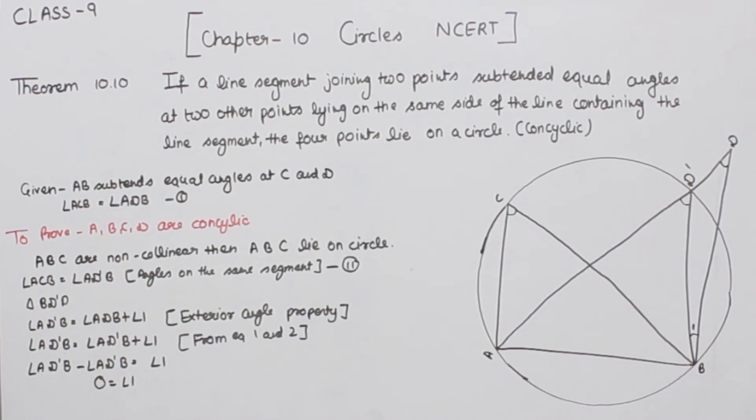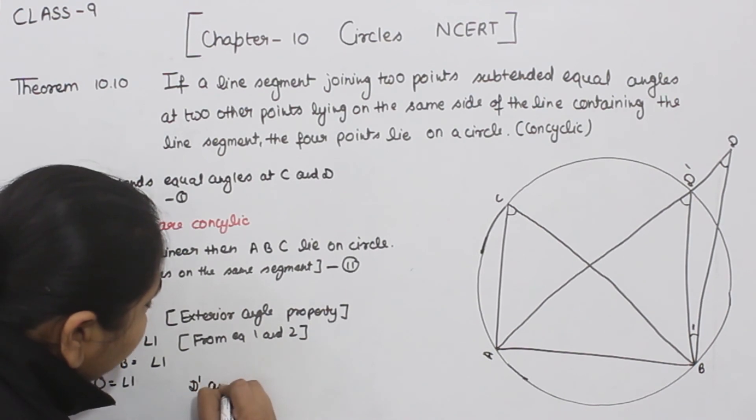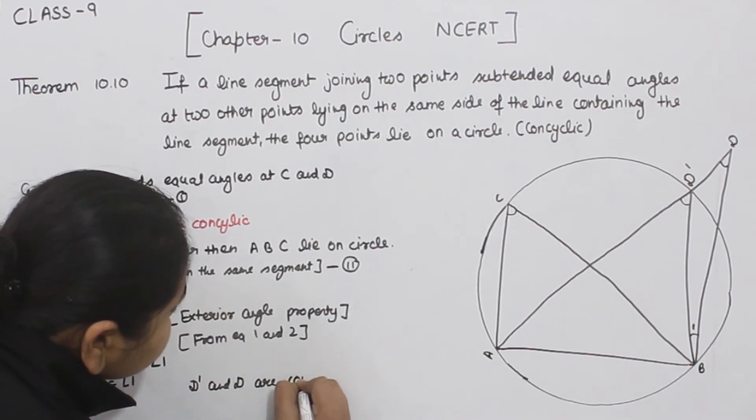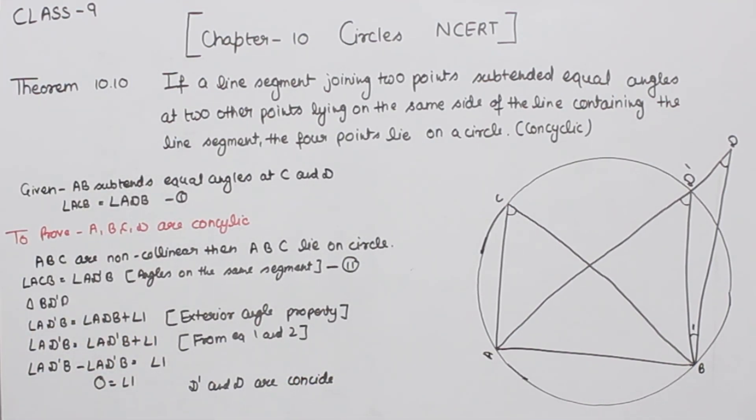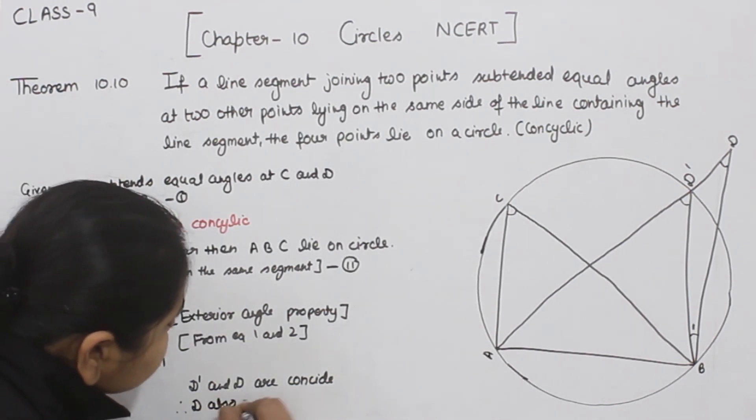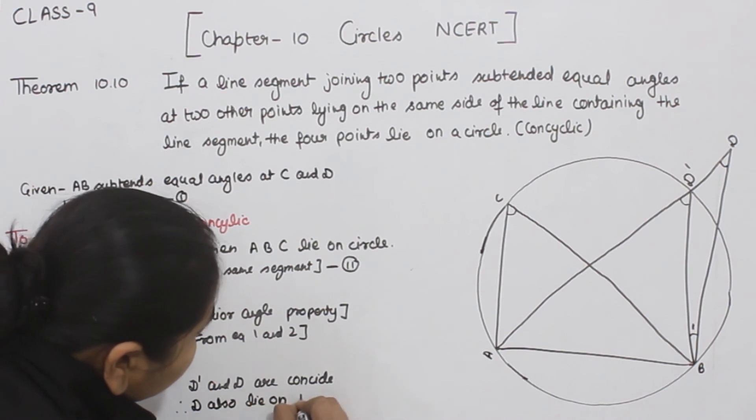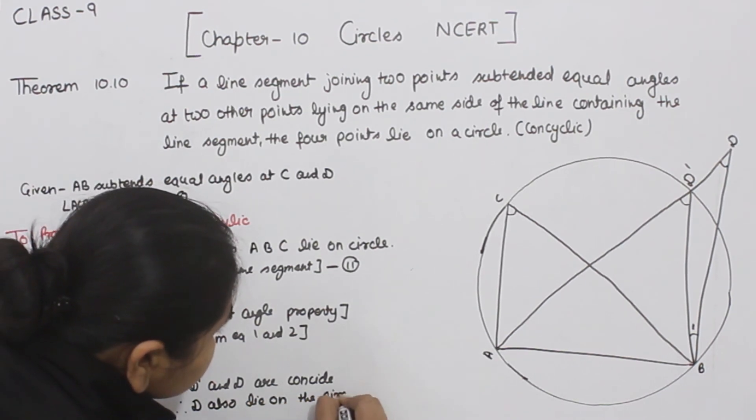Now if angle number one is zero degrees, then D dash and D are coincide. So D also lies on the circle.